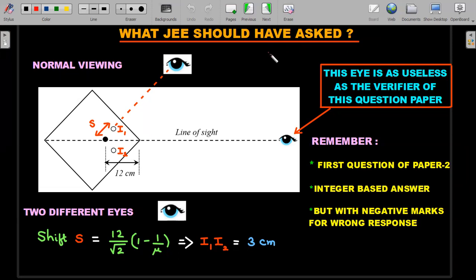Let's try to see what JEE should have asked. They wanted to have an integer answer. One of the easiest problems would have been to actually place two different eyes here. Even in the question there's a hint: they've marked some circles depicting the images, and if I draw a line joining them, it looks like normal viewing.